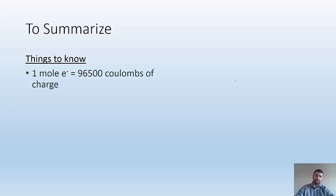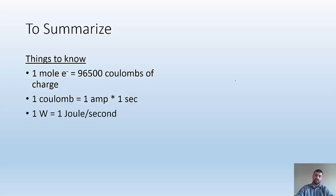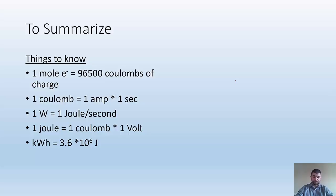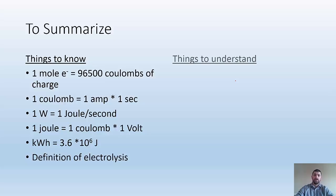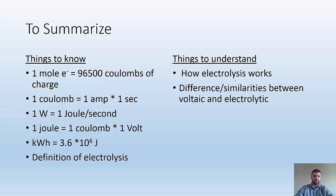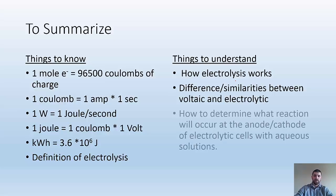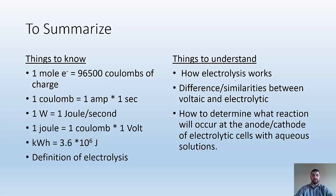To summarize — things to know: one mole of electrons has 96,500 coulombs of charge; a coulomb is an amp times a second; a watt is a joule per second; a joule is a coulomb-volt; a kilowatt hour is 3.6 times 10 to the 6 joules. You also need to know the definition of electrolysis, understand how electrolysis works and how we use electricity to power non-spontaneous reactions, know the differences and similarities between the voltaic and electrolytic cell, and determine what reaction will occur at the anode or cathode of electrolytic cells with aqueous solutions by looking at their potentials. Hope you found it helpful — see you in class!